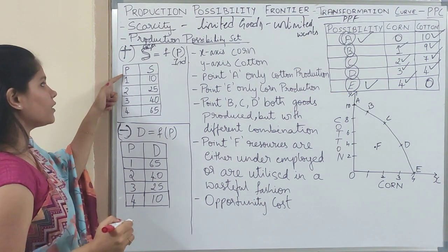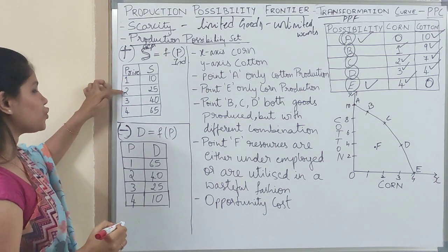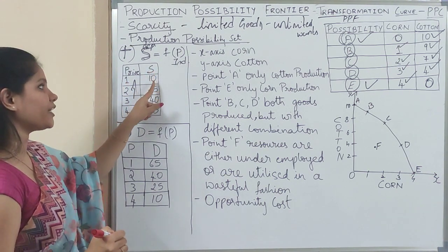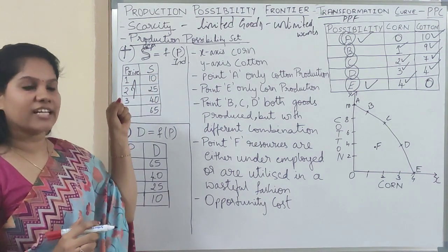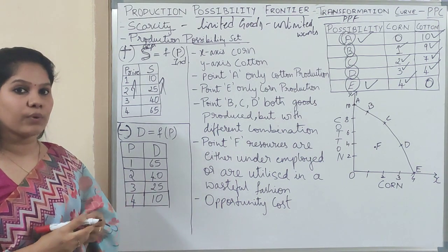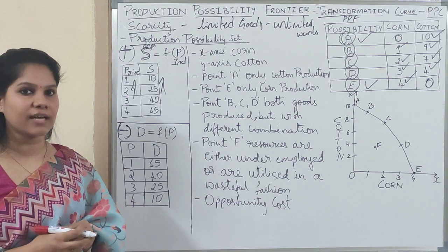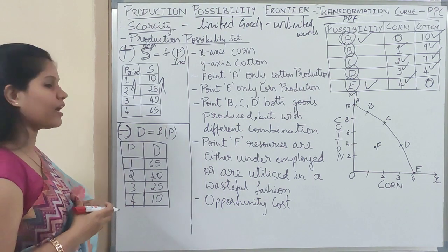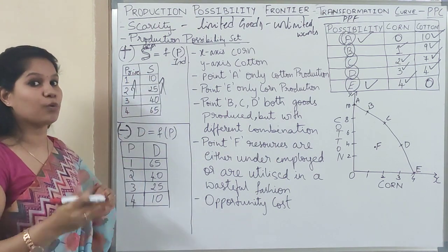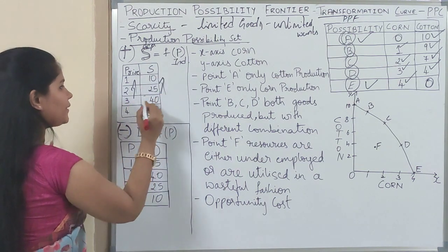Whenever price increases — say from 1 to 2 to 3 to 4 — supply continuously increases as well. The relationship between them is positive. Why does supply increase? Whenever a producer thinks price is increasing, his profit margin is really more. He thinks the risk he is taking will be worth it, so he produces more and more. Whenever price decreases, supply also decreases. Both variables move in the same direction — price increasing means supply increasing, price decreasing means supply decreasing. For this reason we call it a positive function.